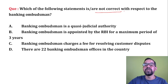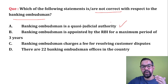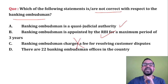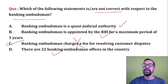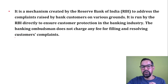Next question: Which of the following statements is not correct regarding Banking Ombudsman? Banking Ombudsman is a quasi-judicial authority — correct. Banking Ombudsman is appointed by RBI for a maximum period of three years — correct. Banking Ombudsman charges a fee — this is the incorrect statement; they do not charge any fee for filing complaints. There are 22 Banking Ombudsman offices in the country — correct. So option C is the incorrect statement.